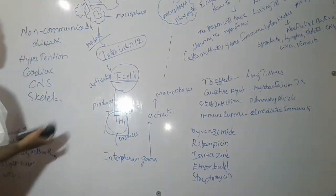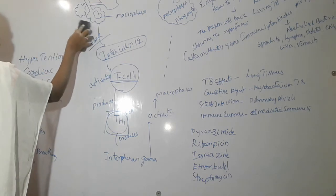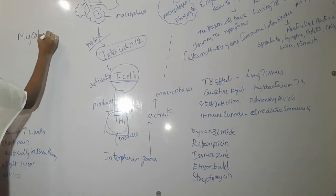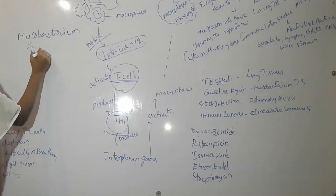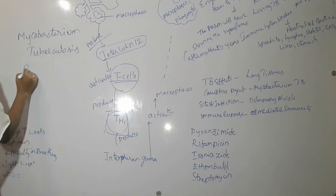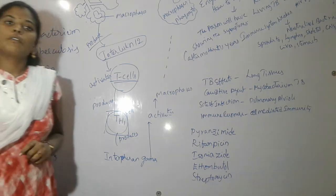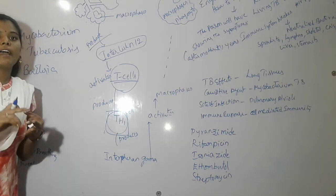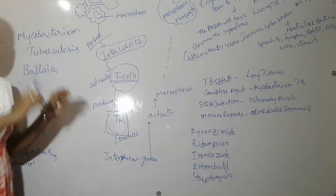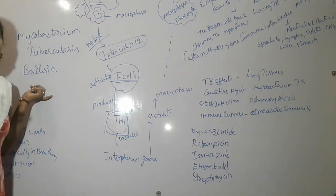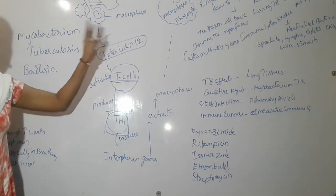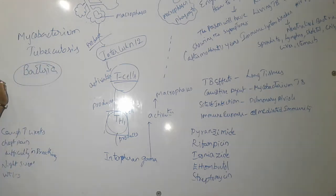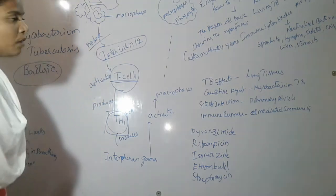Now I am going to discuss about one of the communicable diseases called tuberculosis. What is the causative agent for tuberculosis? It is Mycobacterium tuberculosis — this is the causative bacteria. In competitive exams, they will ask you whether a disease is a fungal, bacterial, or viral disease. You need to know this criteria. Tuberculosis is a bacterial disease caused by Mycobacterium tuberculosis.